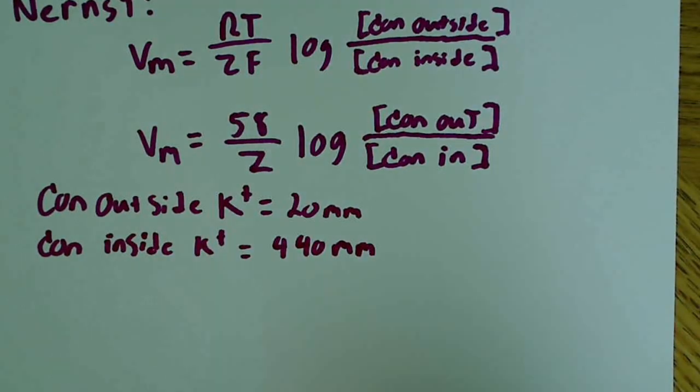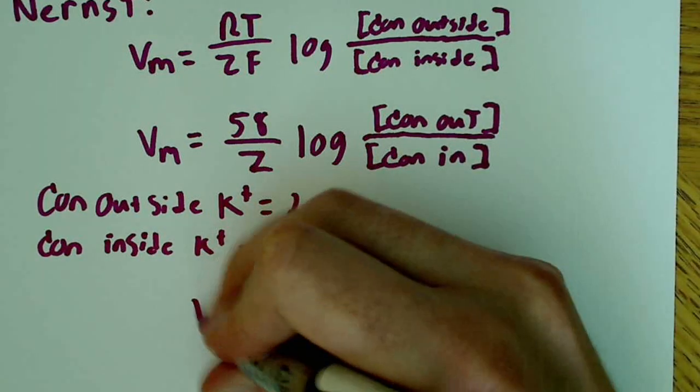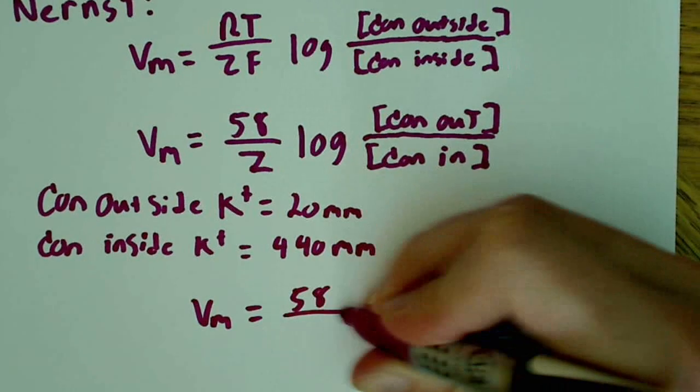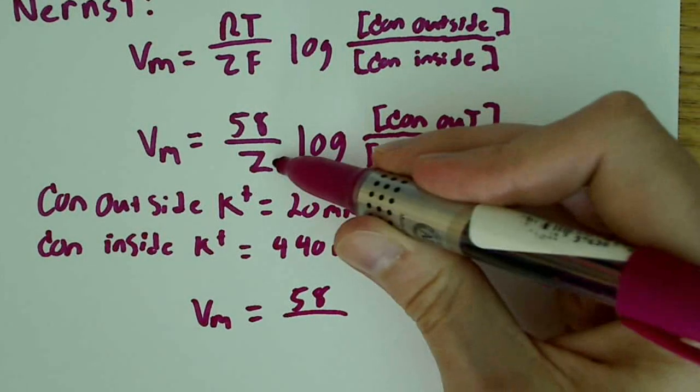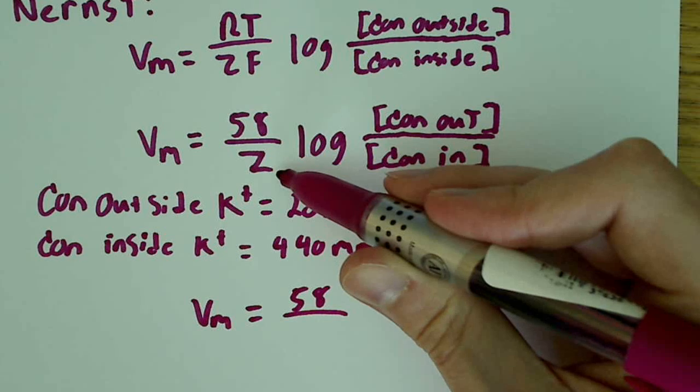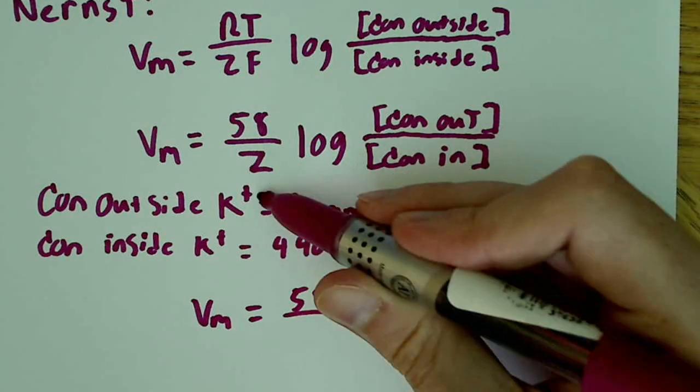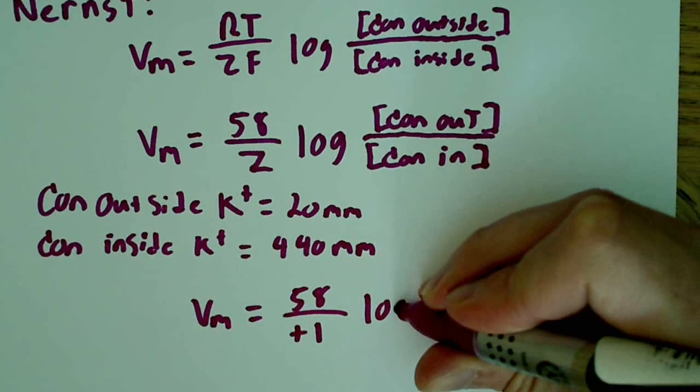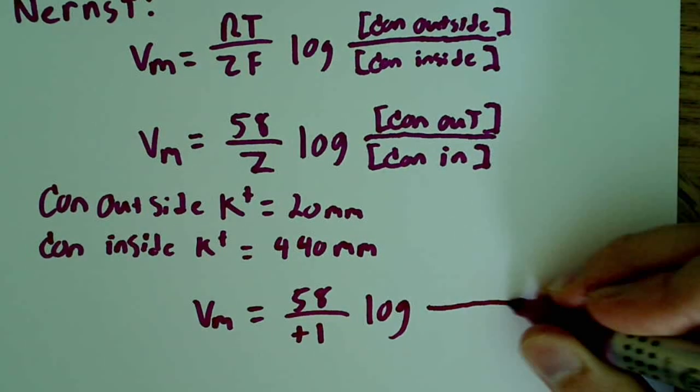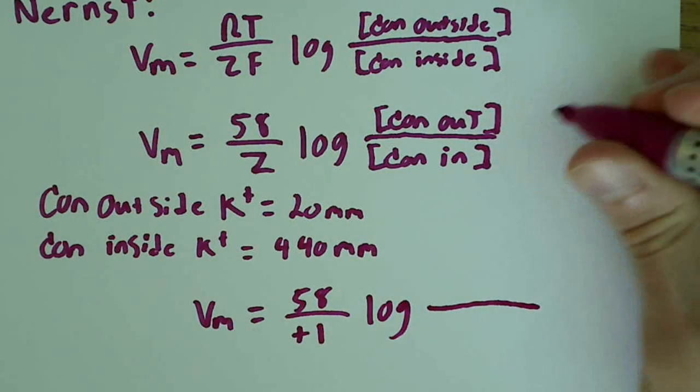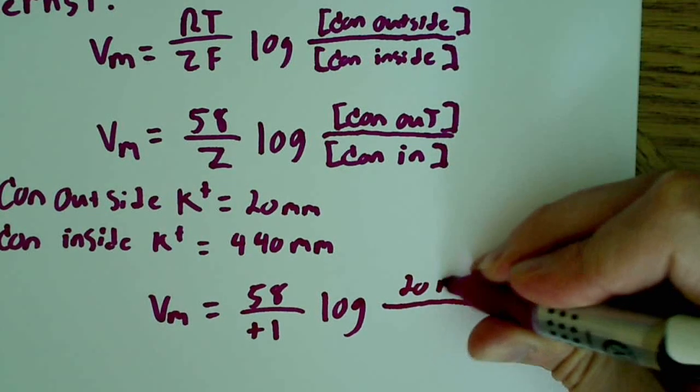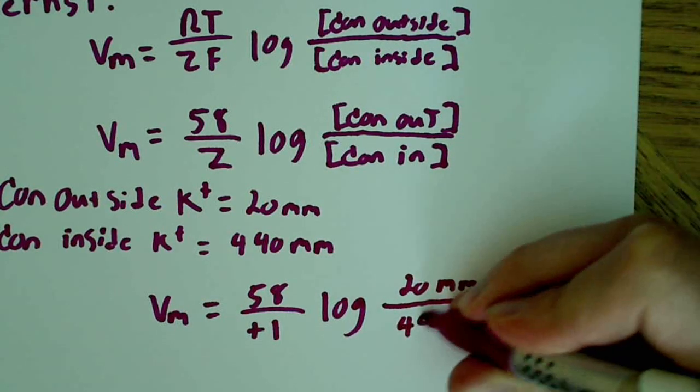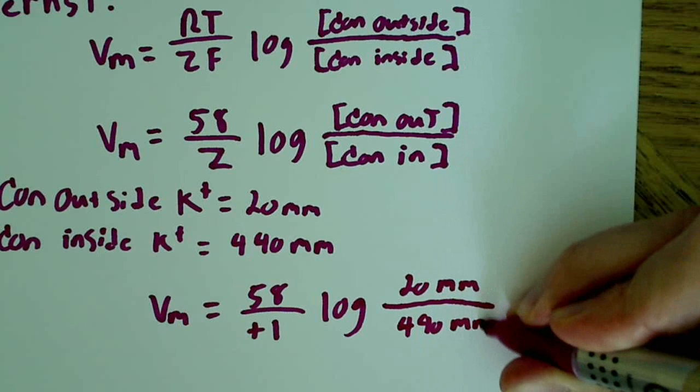What's the VM? Well, this isn't really all that difficult, so all we do is kind of plug and chug here. So it's 58. I'll give you a second to think about what Z is for K plus. Remember I said in the previous video, Z is the charge on the ion, so this is plus 1 on the K plus. And that's the log of the concentration outside, which happens to be 20 millimoles, over the concentration on the inside, which happens to be 440 millimoles.